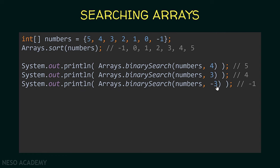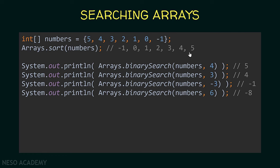Suppose we are searching for minus three. It does not exist in this array. First we find its insertion index — if we insert it and keep the array sorted, we insert it before minus one, so the insertion index is zero. The method returns the negative value of zero plus one, which is why we see minus one. Searching for the number six, which also doesn't exist — the insertion index for six is after five, so the insertion index is seven. The method returns the negative value of seven plus one, which is why we see minus eight.